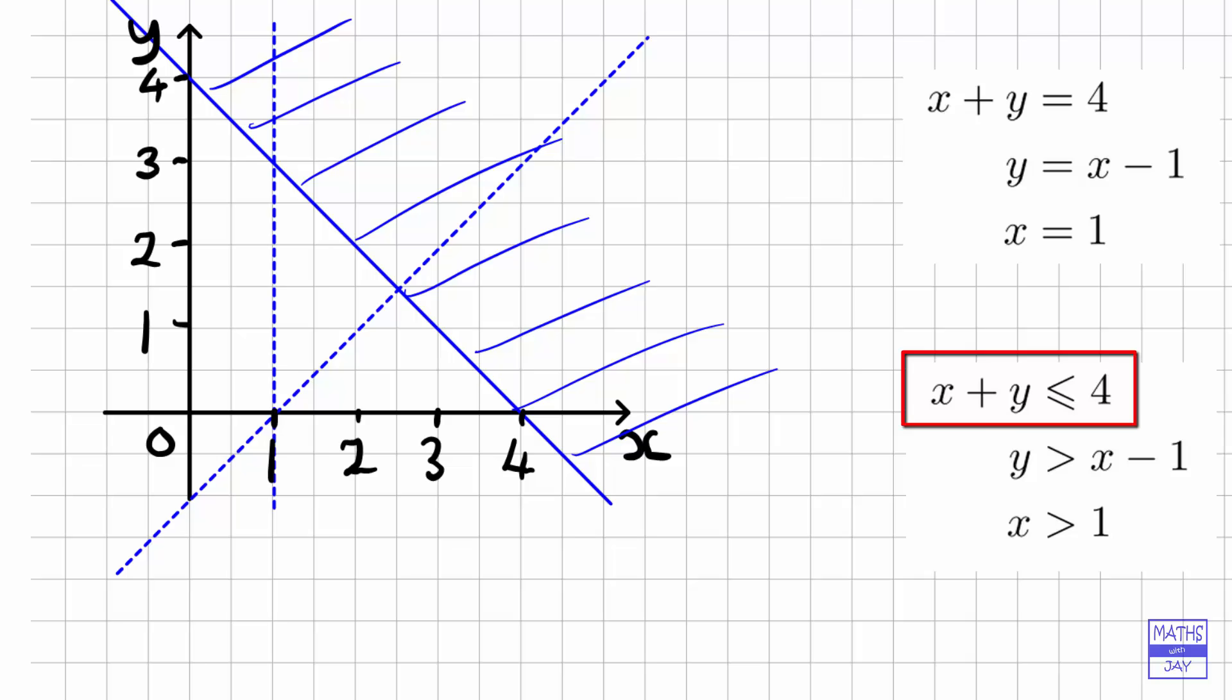For example, if I choose this point here, x is 4 and y is 1.5. If we add those together we get 5.5, so that's greater than 4, so that's good, we don't want that point.